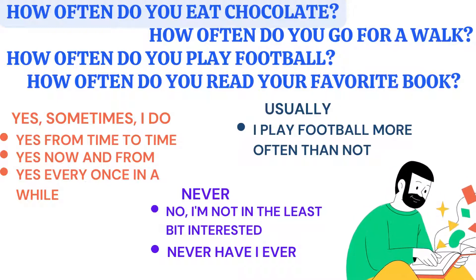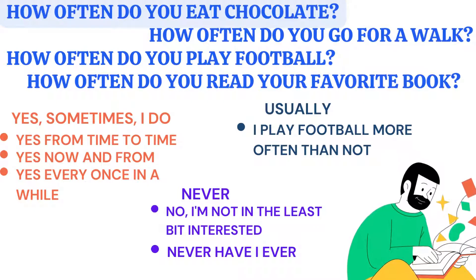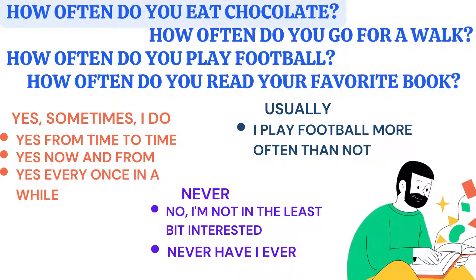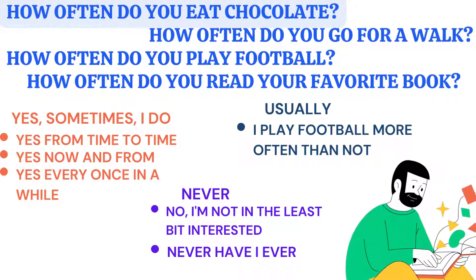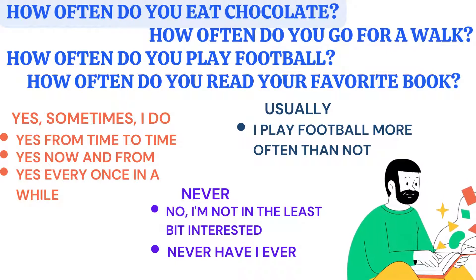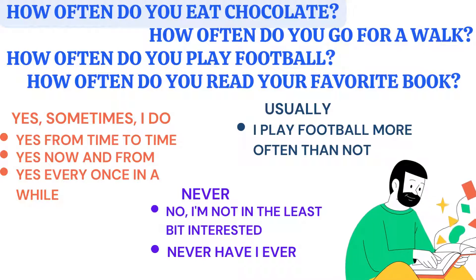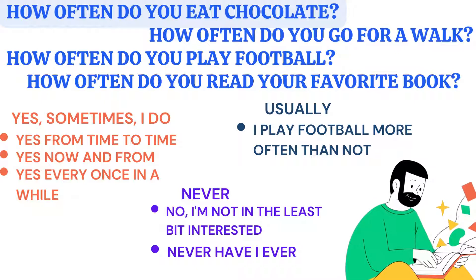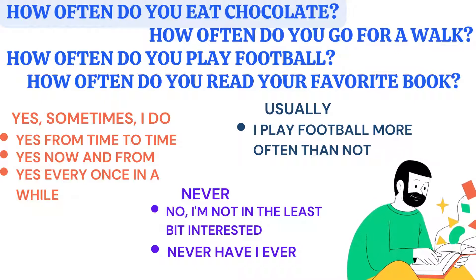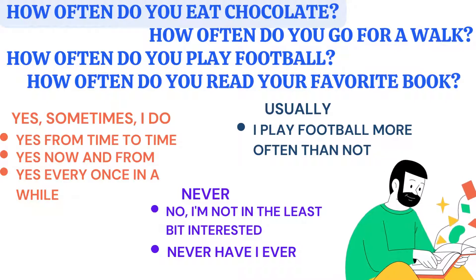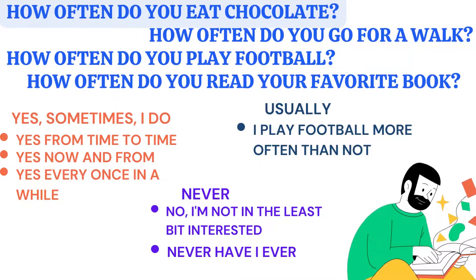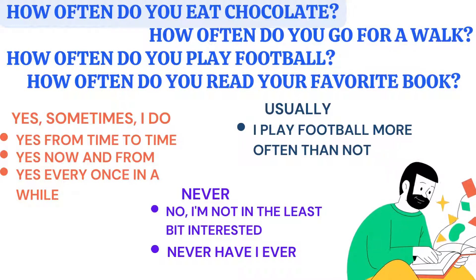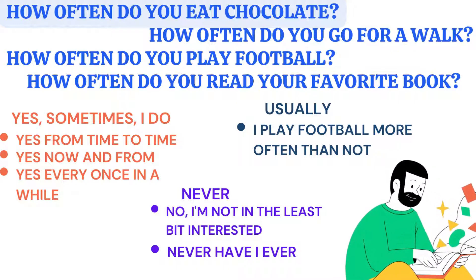In case you want to say that you never do something — for example, 'How often do you eat chocolate?' — you can say: 'I am not in the least bit interested in eating chocolate,' or 'Never have I ever eaten chocolate.' So rather than simply saying 'sometimes,' 'usually,' or 'never,' you can use these phrases instead.